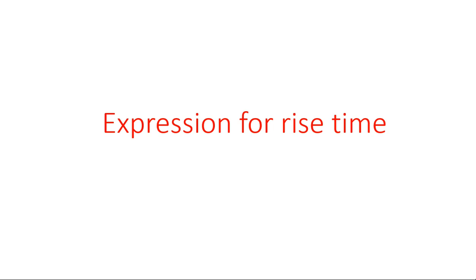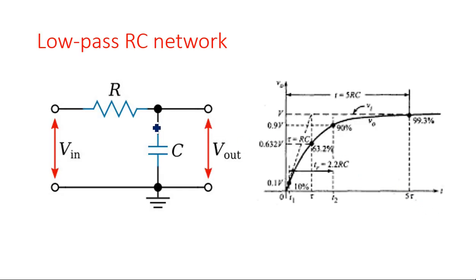In this video I am going to explain the calculation of rise time in the low pass RC network. In the previous video I explained the sinusoidal input condition followed by step input condition. When a sinusoidal signal is applied, the output is also sinusoidal because for linear wave shaping, a non-sinusoidal signal changes its shape, but a sinusoidal signal does not. When a step input is applied, an exponential signal appears at the output.